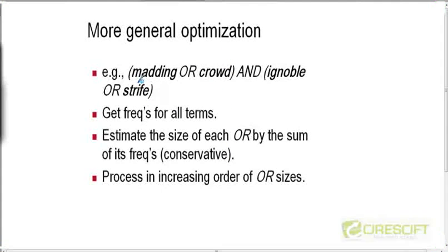Just as for the AND heuristic we said that the length of the postings list, the estimate of the answer if we do Brutus and Caesar, we saw that the length of the answer is going to be less than or equal to the smaller of these two postings lists.